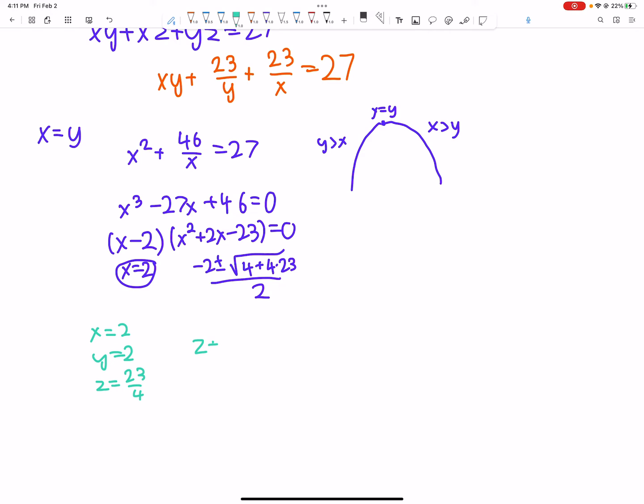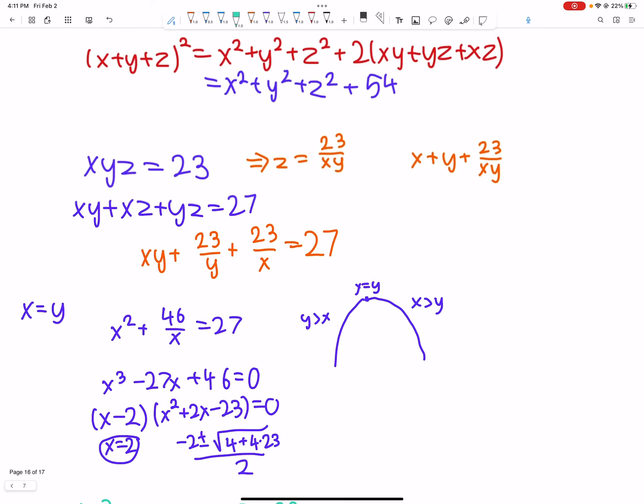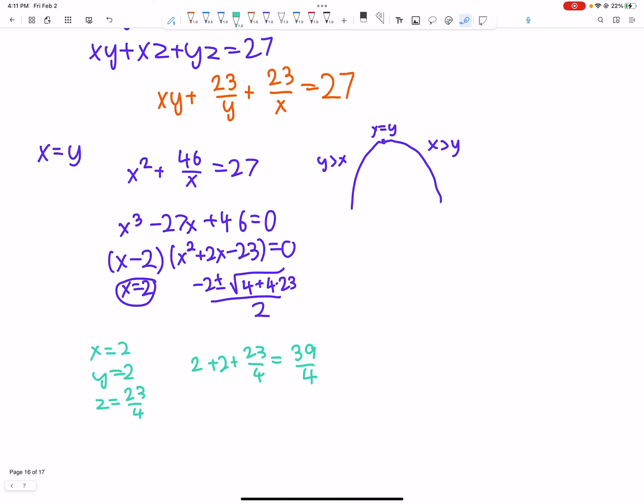So, their sum is 2 plus 2 plus 23 over 4, and that is equal to, that's 8 over 4 plus 8 over 4 plus 39 over 4. That's the sum of x plus y plus z. And then, we can solve for x later. But now, let's take a look at these irrational roots.